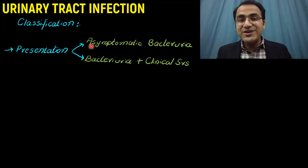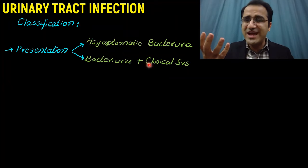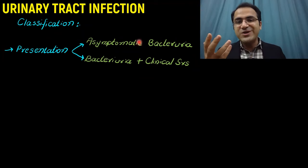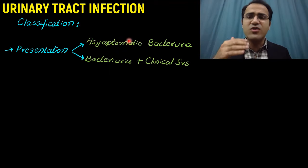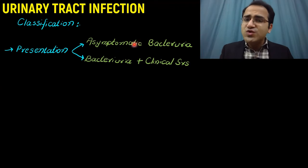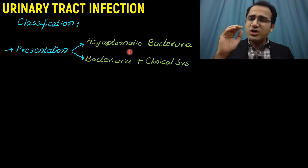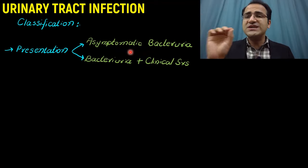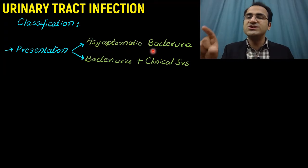The presentation can be classified into asymptomatic bacteriuria and bacteriuria with clinical symptoms. In asymptomatic bacteriuria, the patient has no symptoms of UTI — no dysuria, urgency, frequency, flank pain, or suprapubic tenderness — but bacteria are present in the urine. These patients are not to be treated unless asymptomatic bacteriuria is found in pregnancy. Asymptomatic bacteriuria is only treated in pregnant females.